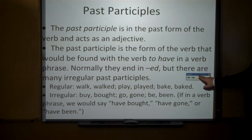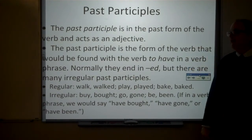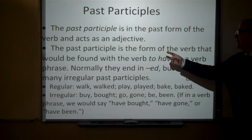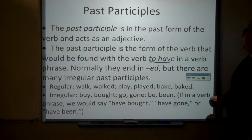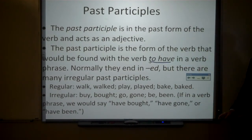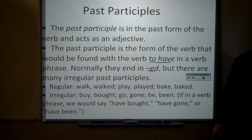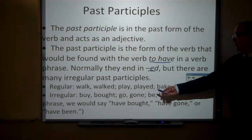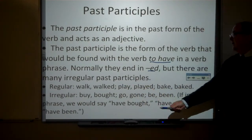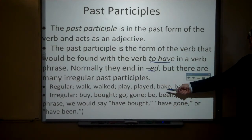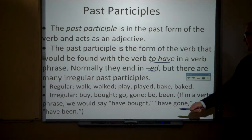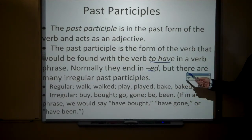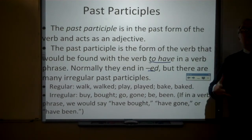The past participle is in the past form of the verb and acts as an adjective. It is the form of the verb that would be found with the verb 'to have' in a verb phrase. Normally they end in ED. For example: walk — walked; play — played; bake — baked. It always ends in a D, but you have to follow the spelling rule.